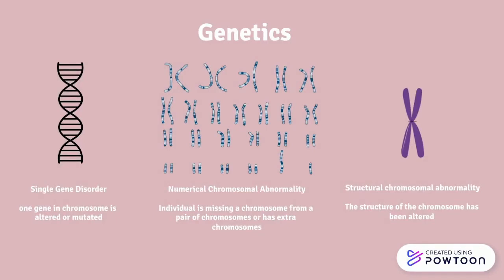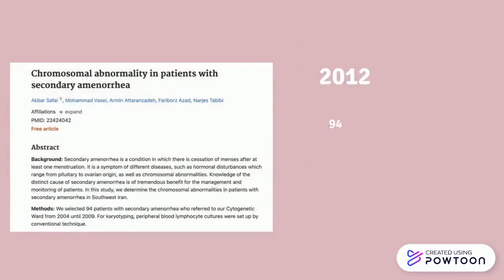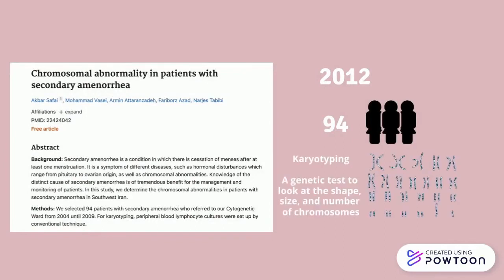There are various cross-sectional studies that have looked at chromosomal abnormalities in female patients. For instance, a study in 2012 recruited 94 female patients recognized with secondary amenorrhea. They used karyotyping, which is a conventional genetic technique, to monitor chromosomal abnormalities, and found that five out of the 94 patients indeed had chromosomal abnormalities. There are also additional lifestyle factors associated with secondary amenorrhea.